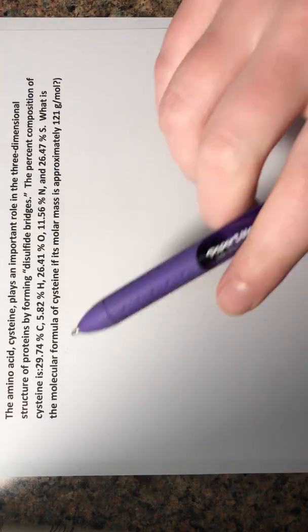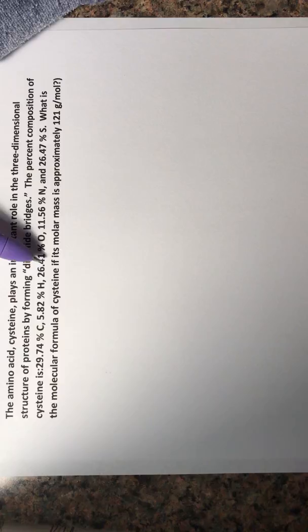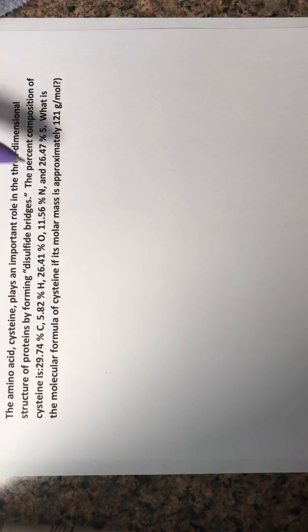First, let's look at our significant figures just to know what we're working with. So we have 29.74, which is 4. This is three significant figures, 4, 4, 4, and 3. So overall, we're going to be using three significant figures.